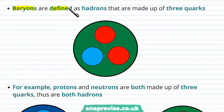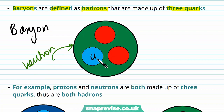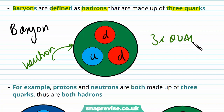Baryons are defined as hadrons that are made up of three quarks. For example, a neutron is made up of three quarks — one up quark and two down quarks. Since it has three quarks, we can classify a neutron as a baryon.